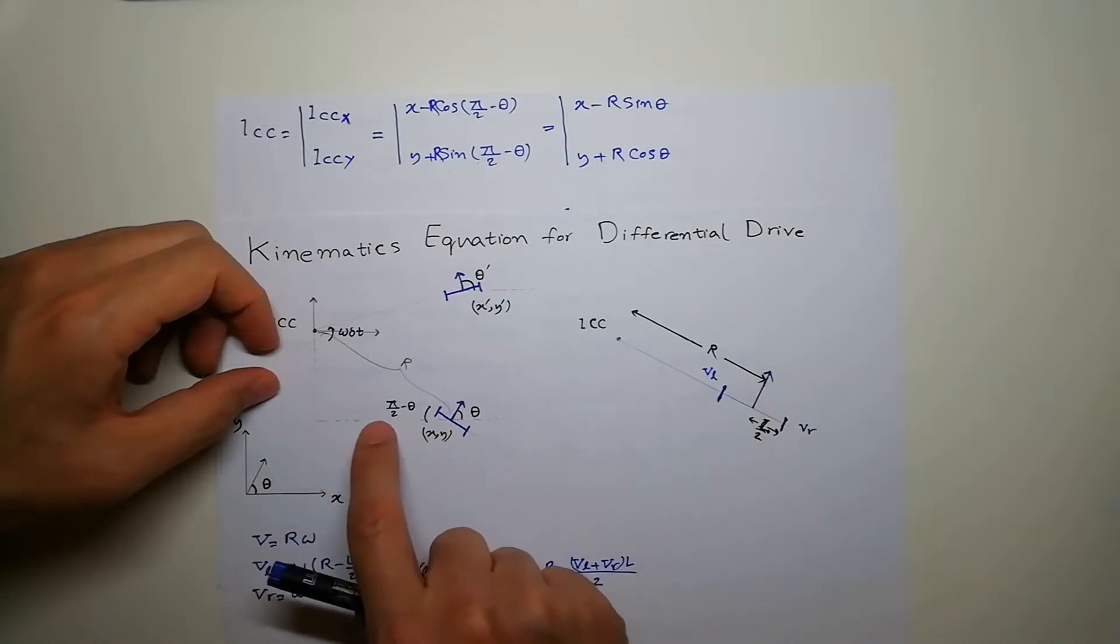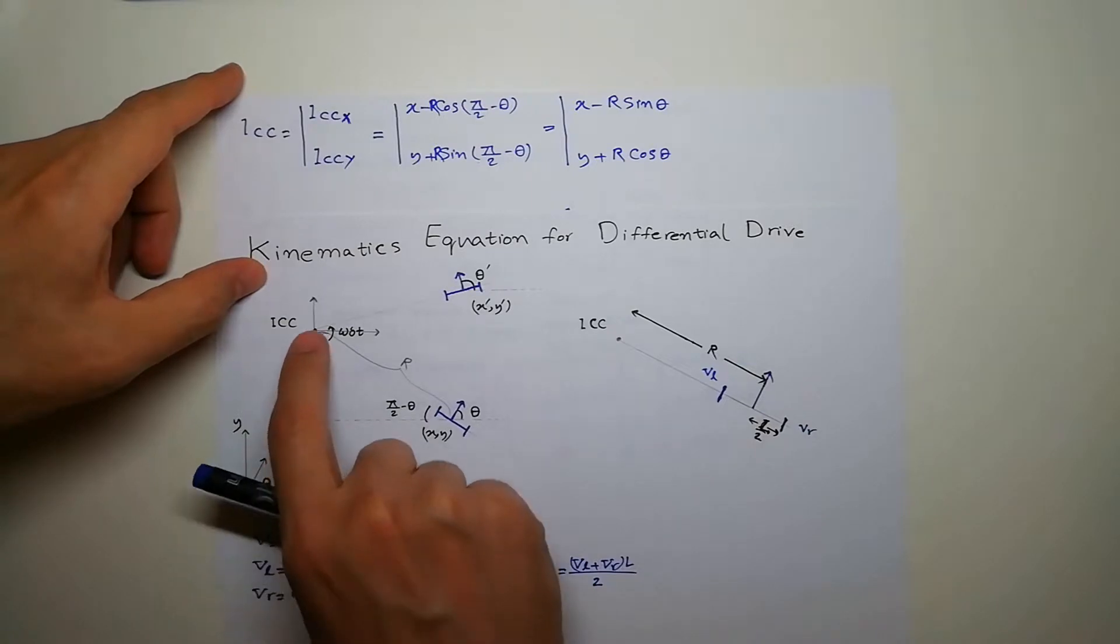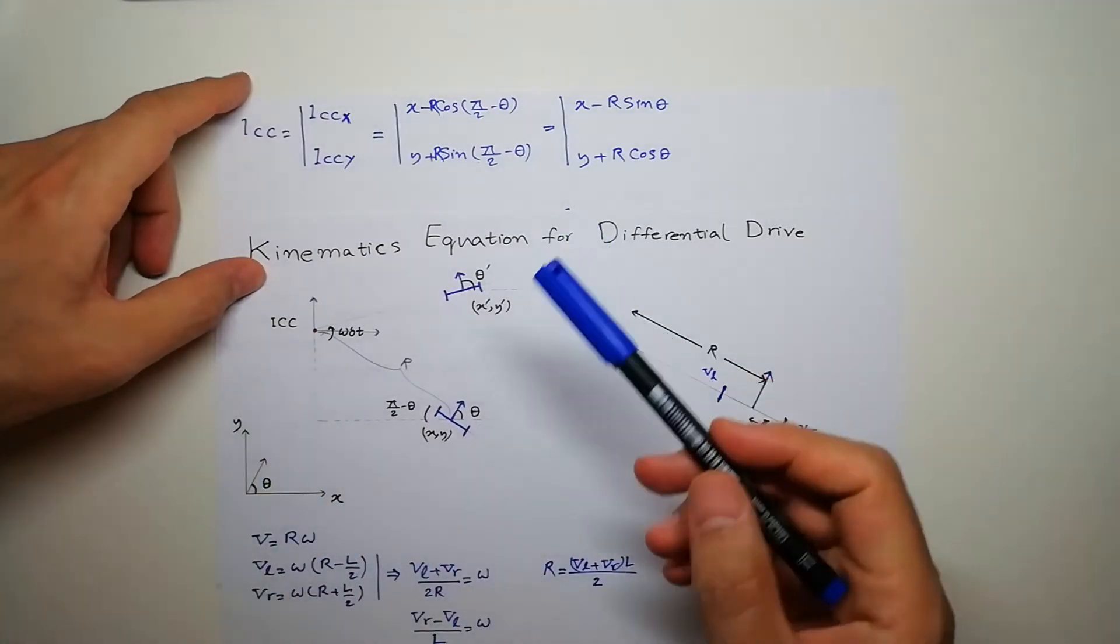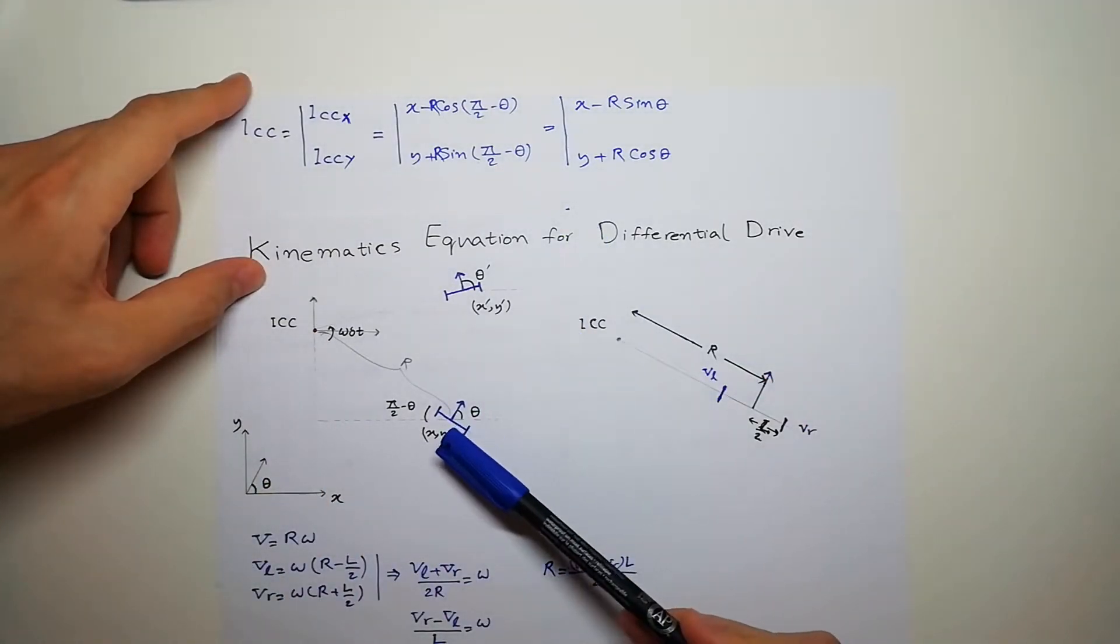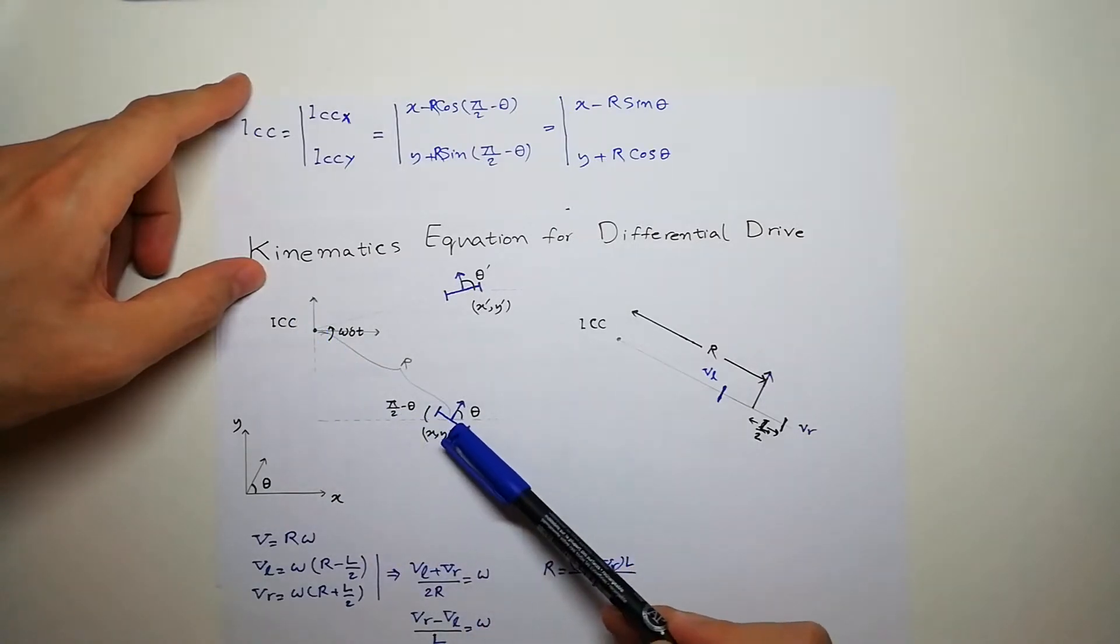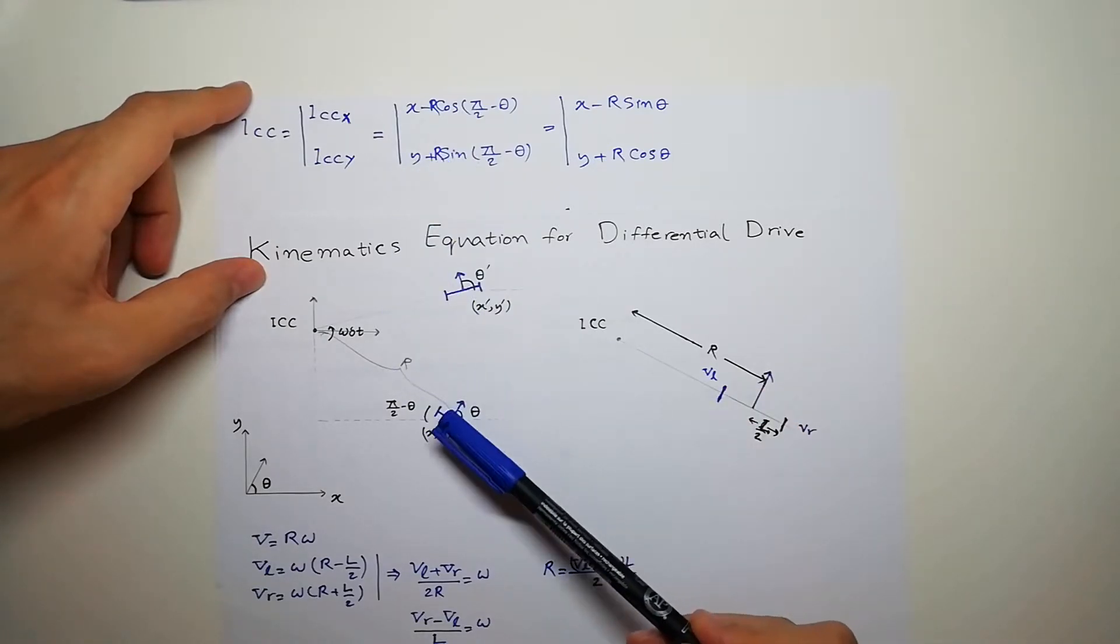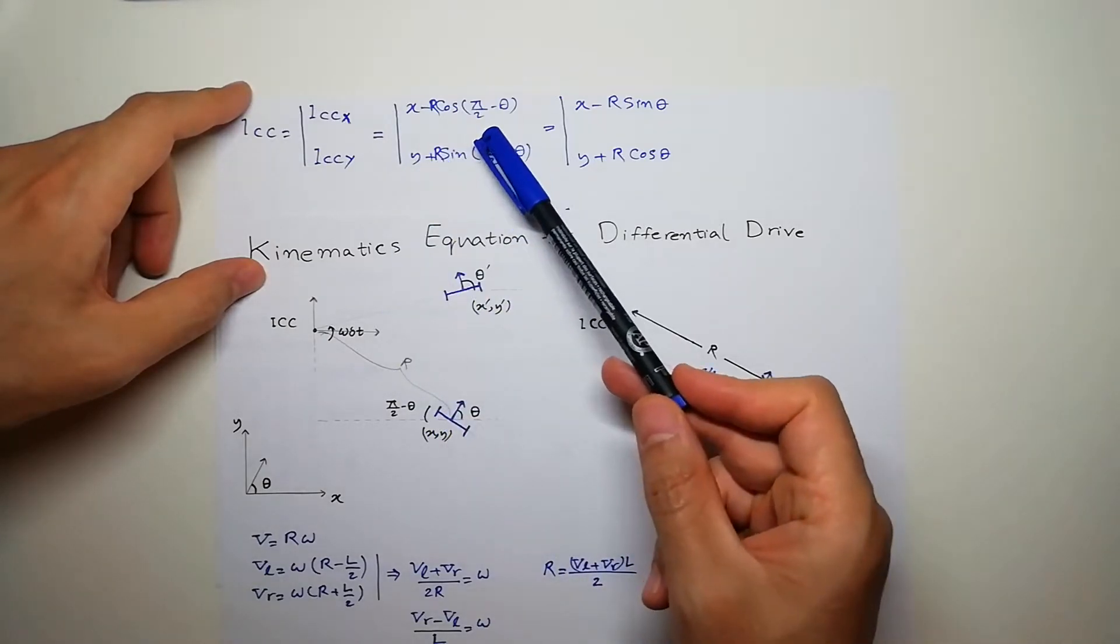So this is going to be cosine of this angle which is pi half minus theta and it's going to be sine of this angle. So the X of this point of our ICC is going to be position of the robot minus R cosine of half pi minus theta.